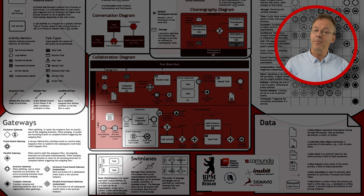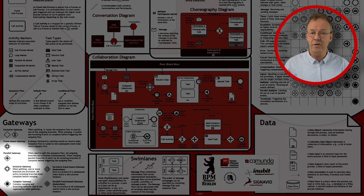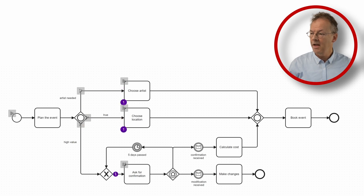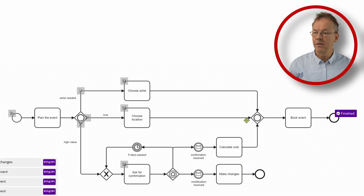In BPMN this can be modeled with a joining inclusive gateway. In the first case we start, we plan the event and then we choose an artist and we choose a location and now the OR join is waiting here with two tokens. We ask for confirmation and now let's say we receive a modification and immediately the OR join fires. That's okay.